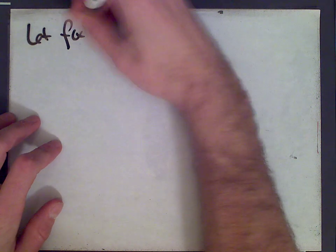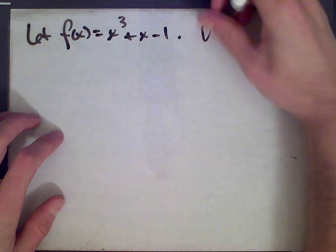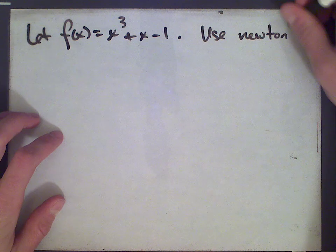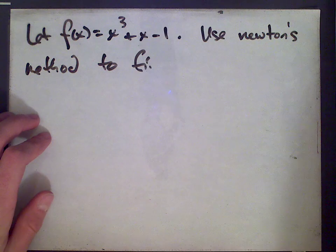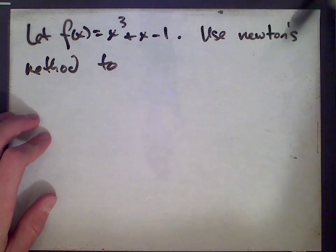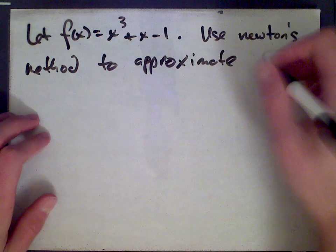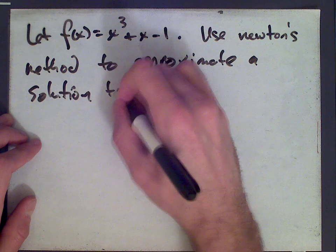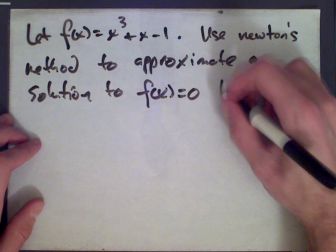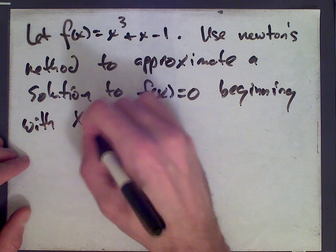This is question number three about Newton's method. Let f of x equals x cubed plus x minus one. Use Newton's method to approximate a solution to f of x equals zero, beginning with x zero is zero.